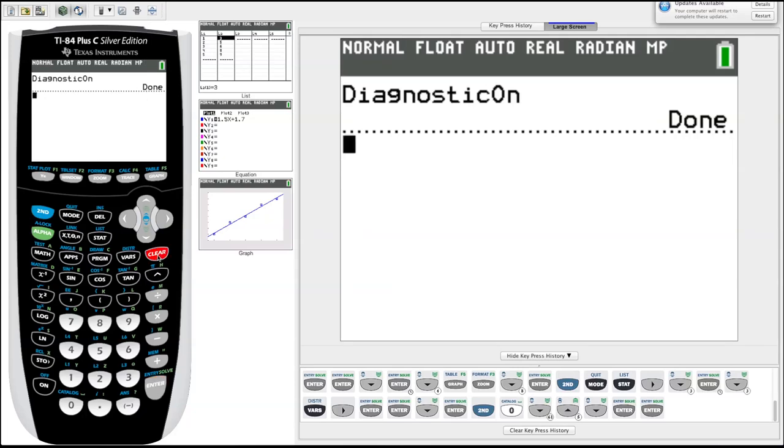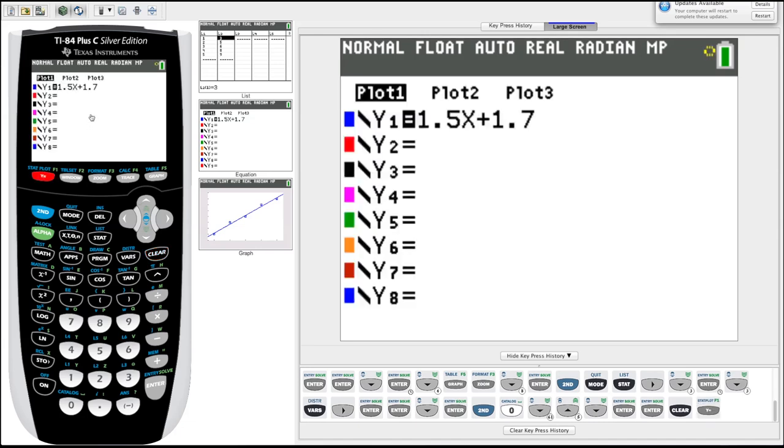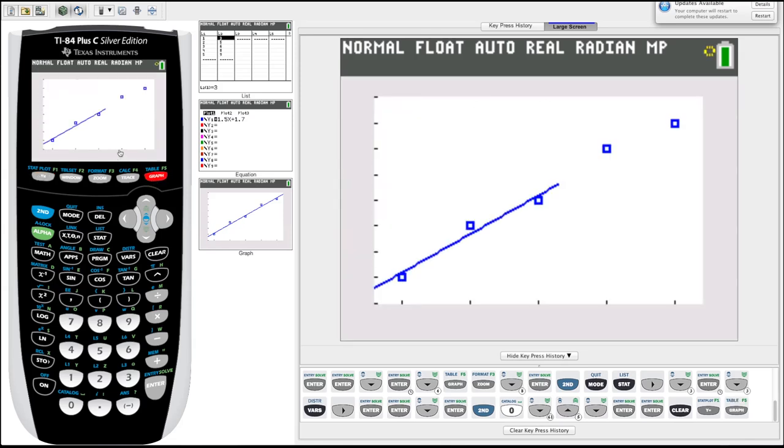So then, if you were to go back in and do your regression line, you'll see the r squared like we did. So now we can check that the equation was automatically entered into y equals by clicking y equals. So now if we hit graph, it should graph that equation. And look, there it goes. Fits pretty well.